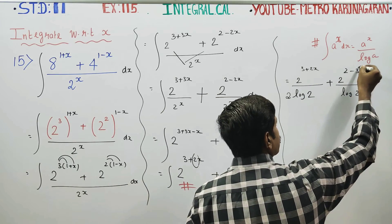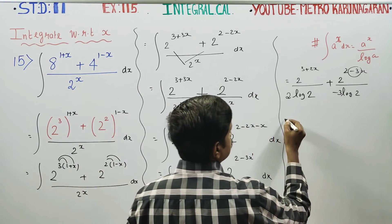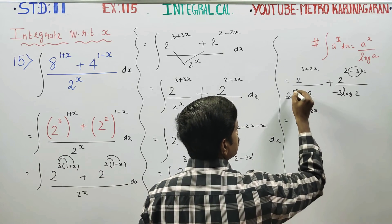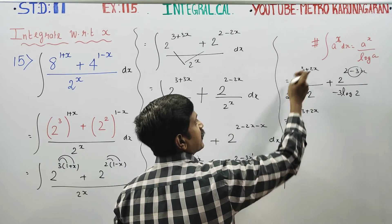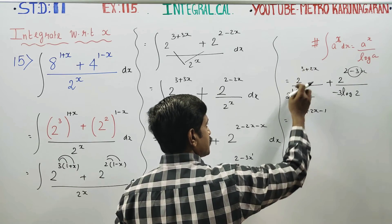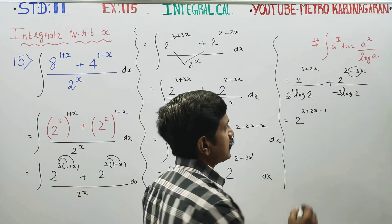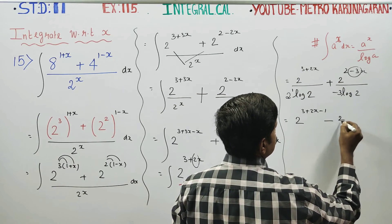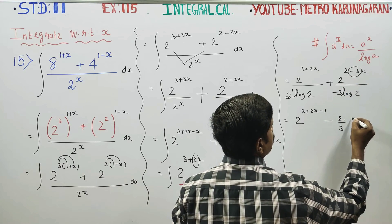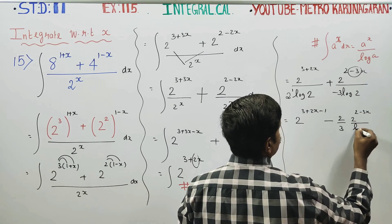For the term 2 power (3 plus 2x), the coefficient of x is 2, so divide by 2 log 2. For 2 power (2 minus 3x), the coefficient is minus 3, so divide by minus 3 log 2. That gives 2 power (2 minus 3x) divided by 3 log 2.